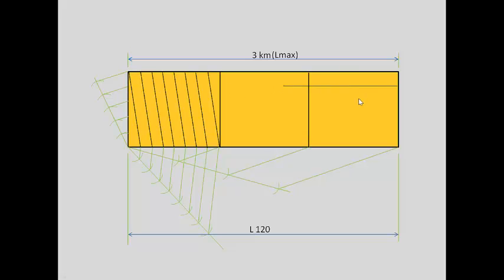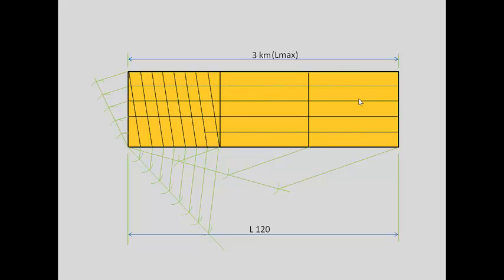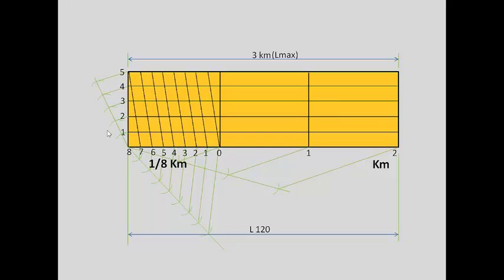Join the points to the top left and draw parallel lines. Now name the points: this is 0, this is 1, and this is 2. Likewise, label 1, 2, 3, 4, 5, 6, 7, 8. And this side: 1, 2, 3, 4, 5. This rectangle represents 1/8 kilometer, and this part helps to divide further into 5 equal parts, so it represents 1/40 kilometer.